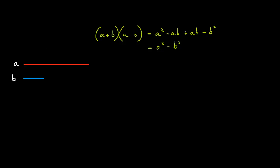Now since this is length a and this is length b, what would the length a minus b look like? Well, I'm going to subtract the length b from the length a. If I were to do this, then I'd have a length a minus b that looks like this. So we're going to call this length a minus b.